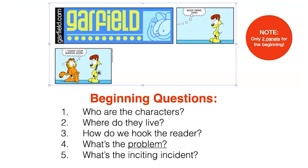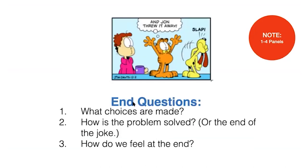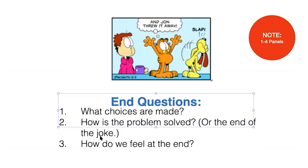The middle begins with 'But I lost it again.' Middle questions to ask yourself: What happens next? How does the problem get worse? What changes happen? We escalate the story by playing with Odie's emotions, joking around with him. For a one-page comic you want to spend about four to six panels in the middle. At the end you solve the problem or end the joke, and you want to create a funny, happy, or sad feeling — whatever ending fits your story.